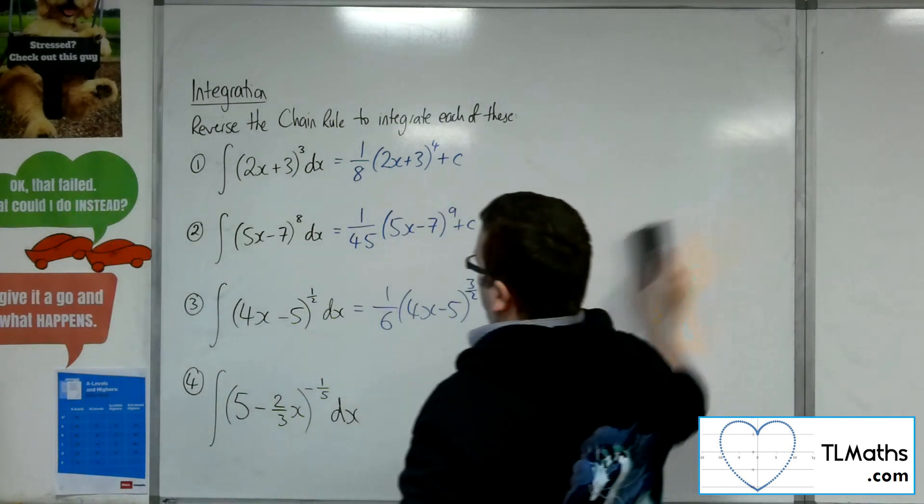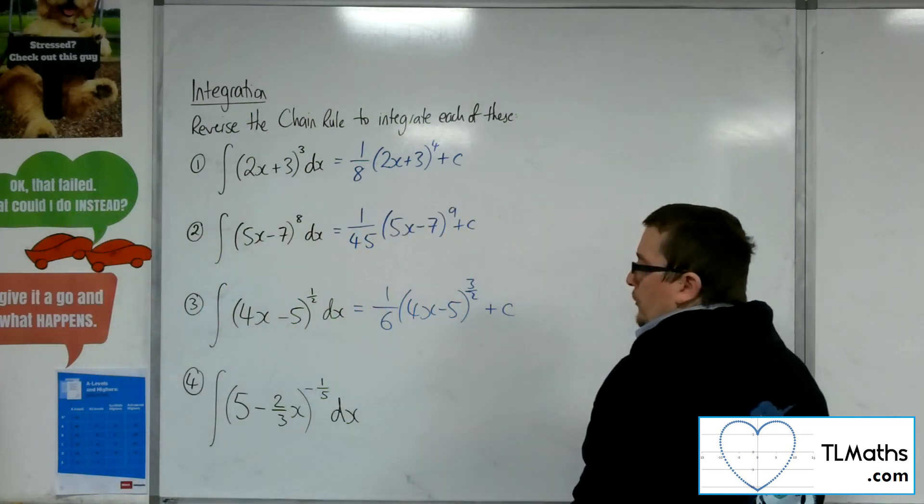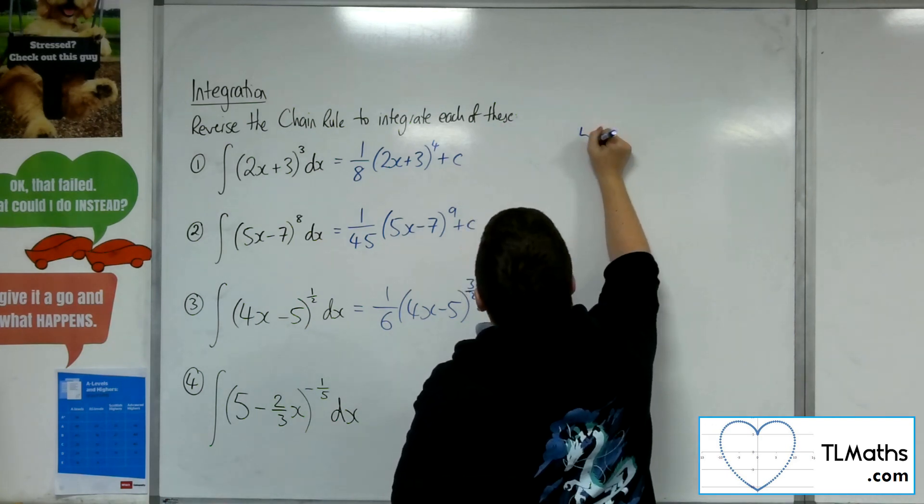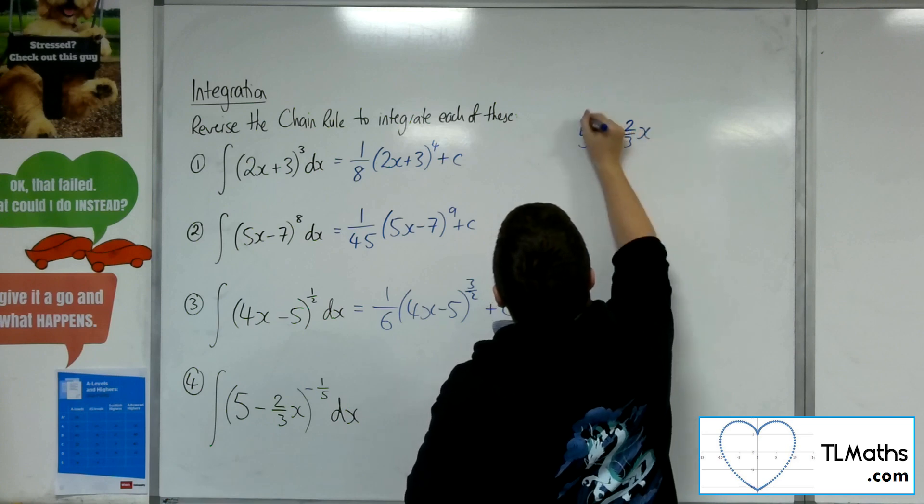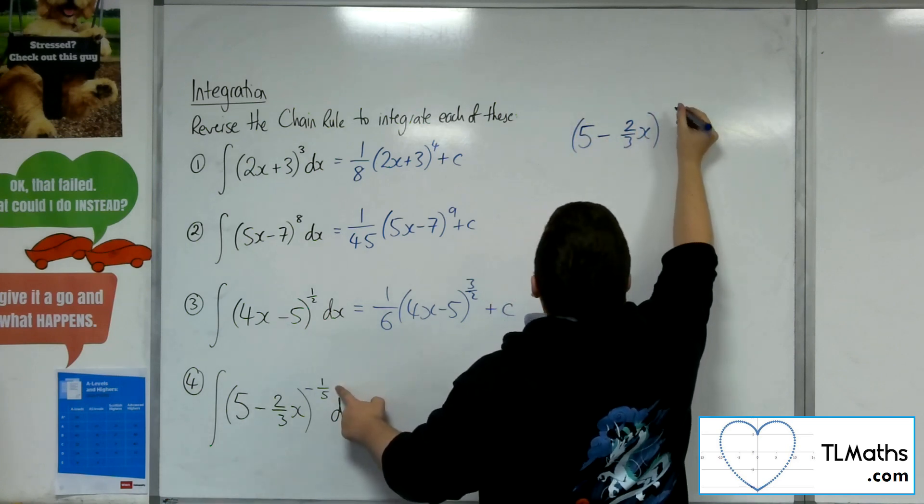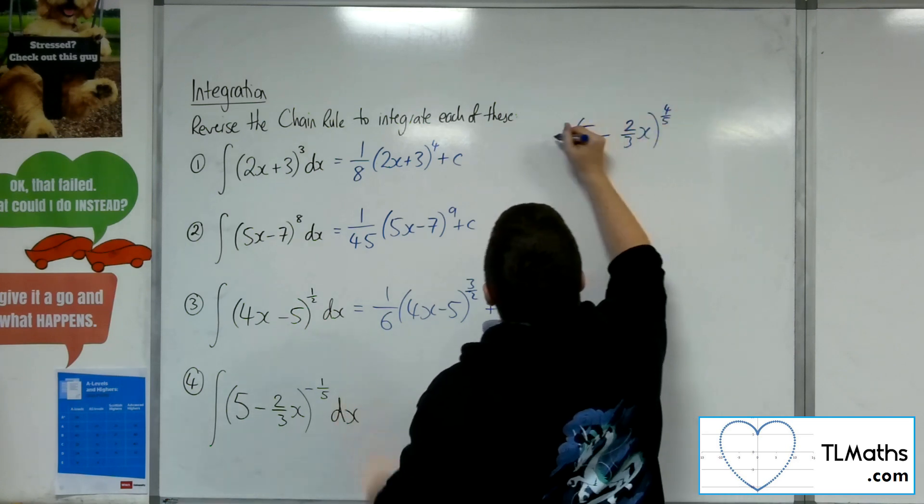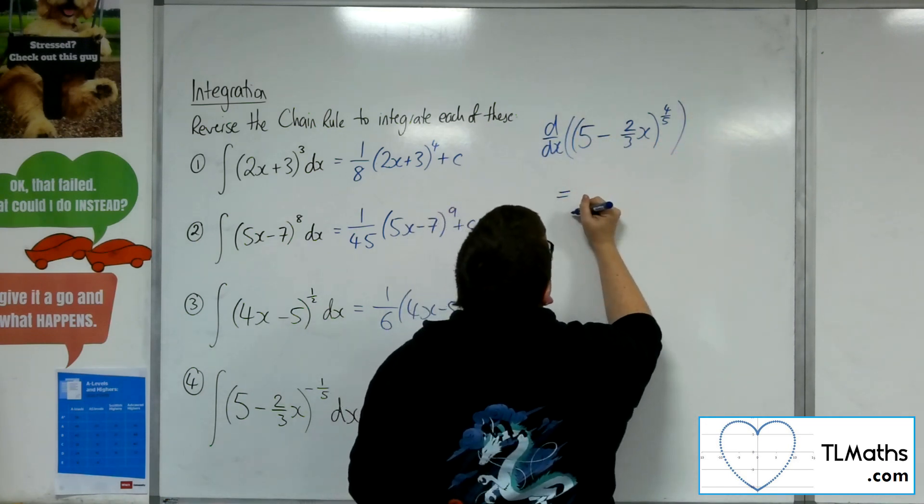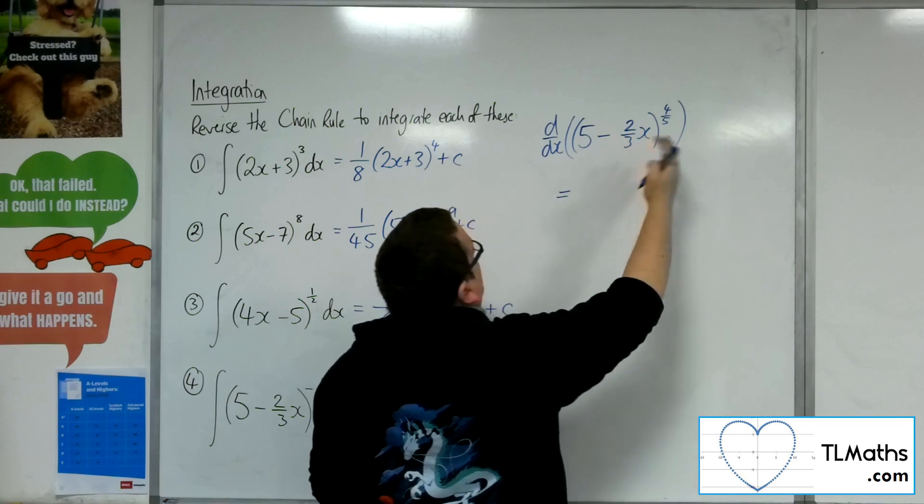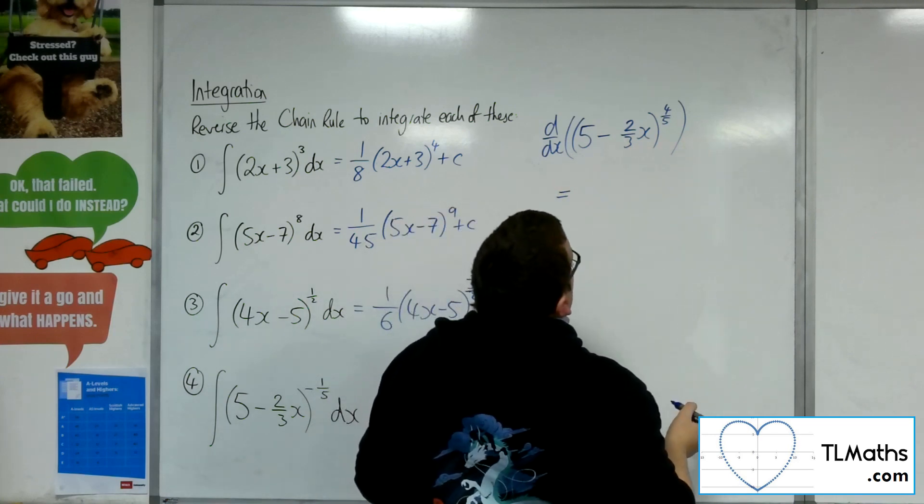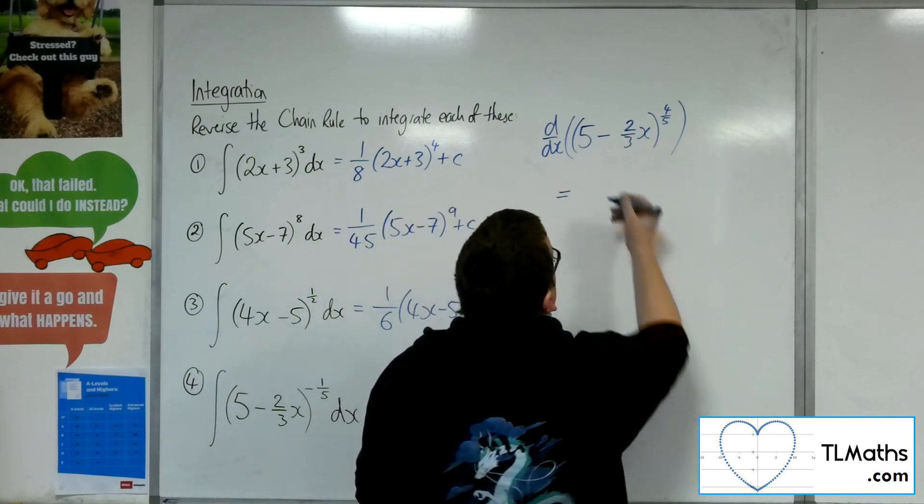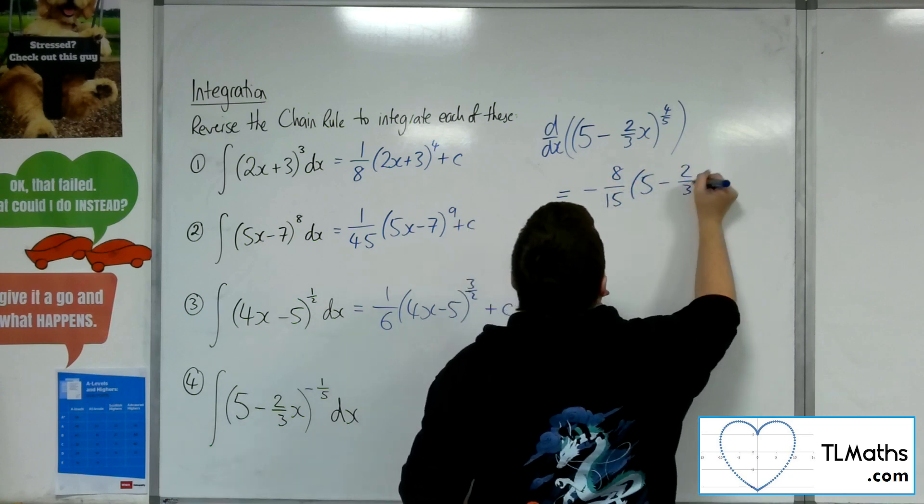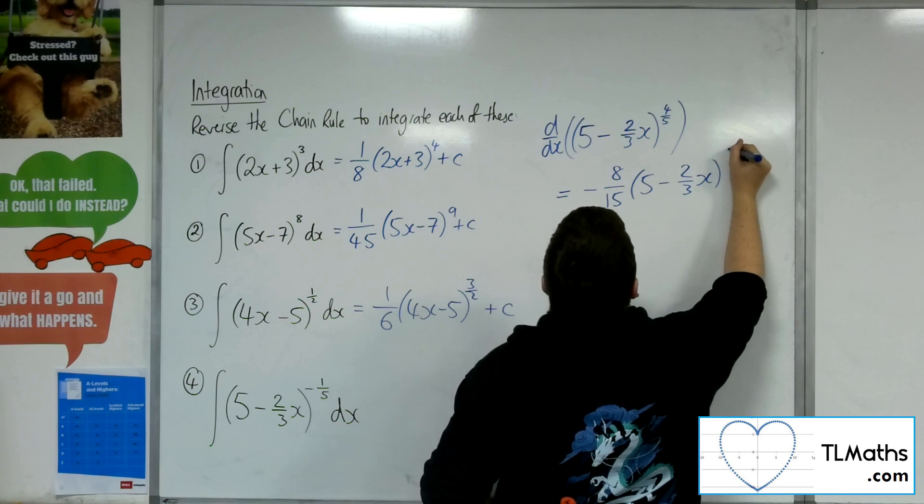Last but not least, 5 minus 2 thirds x to the power of minus a fifth. So I should be getting this 5 minus 2 thirds x. Adding 1 to the power will get me to 4 fifths. So if I differentiate that, see what I get using the chain rule. I'm going to have 4 fifths and minus 2 thirds coming out to the front. So they would multiply to make minus 8 fifteenths, 5 minus 2 thirds x to the minus 1 fifth.